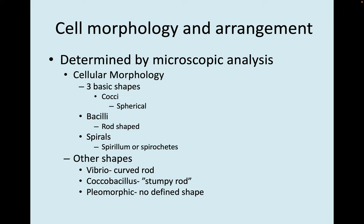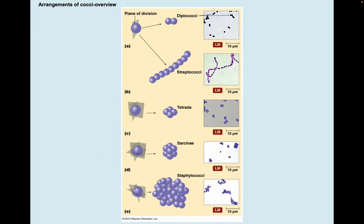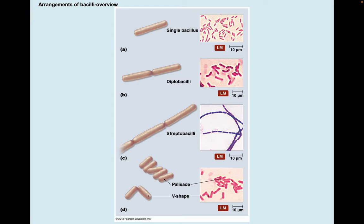To review cell morphology and arrangement: we use a microscope to determine cell morphology. The three basic shapes are cocci, bacilli, and spiral. There are other shapes like vibrio, coccibacillus, and pleomorphic. Cells can also be arranged in special ways: a string of cocci are streptococci, a pair are diplococci, fours are tetrads, eights are sarcinae, and a large cluster are staphylococci. Bacilli can be single, diplo, in strings as streptobacilli, lined up side-to-side as palisade bacilli, or in V-shape arrangements.